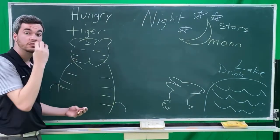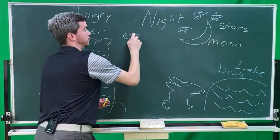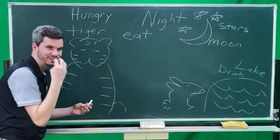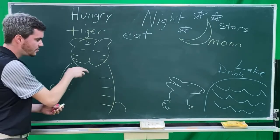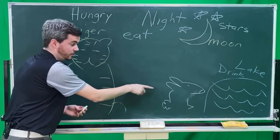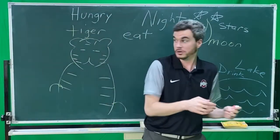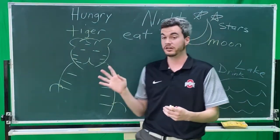So the tiger wants to eat the rabbit. The tiger sees the rabbit. Very good. You get to eat the rabbit. The tiger starts to walk to the rabbit. And the rabbit turns around. Sees the tiger.